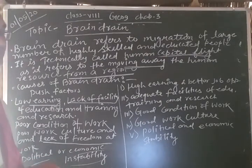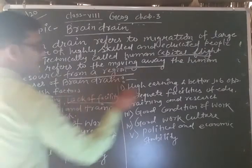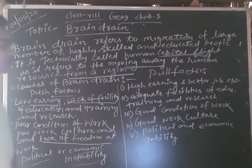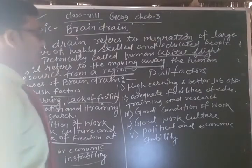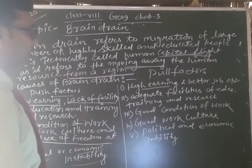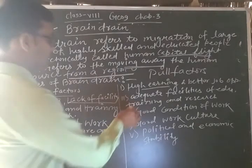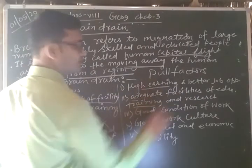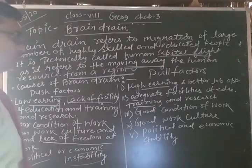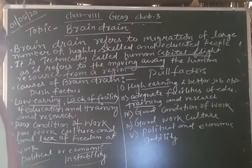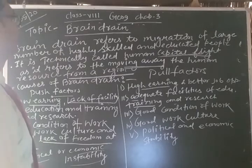Pull factors are the opposite: high earnings in another country, better job opportunities, adequate facilities for education, training, and research, good conditions of work, good work culture, and political and economic stability. These pull factors lead people to migrate to other countries — this is the cause of brain drain.